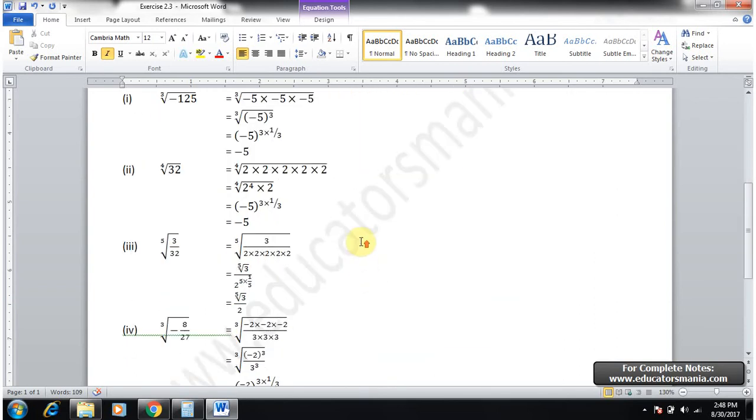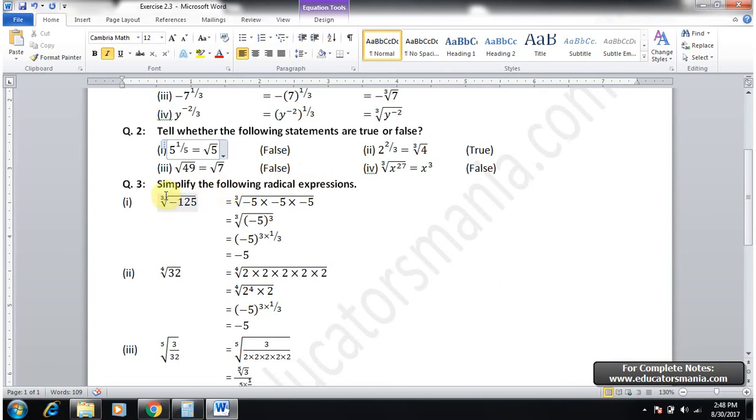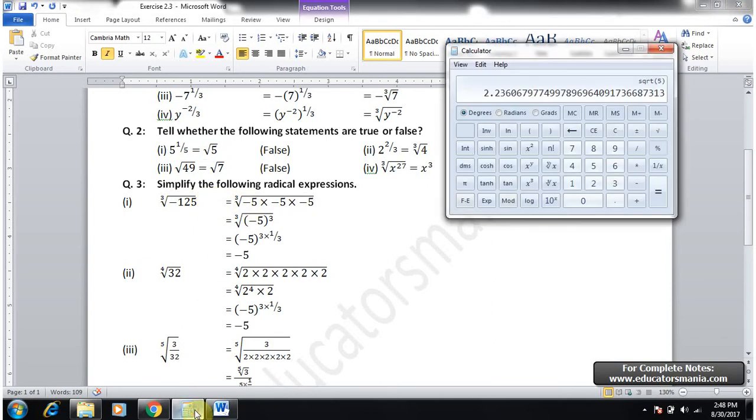Question 3: Simplify the following radical expressions. Third root of minus 125. So minus 125, if we take factorization, it becomes minus 125 divided by minus 5, minus 5 multiplied by minus 5.